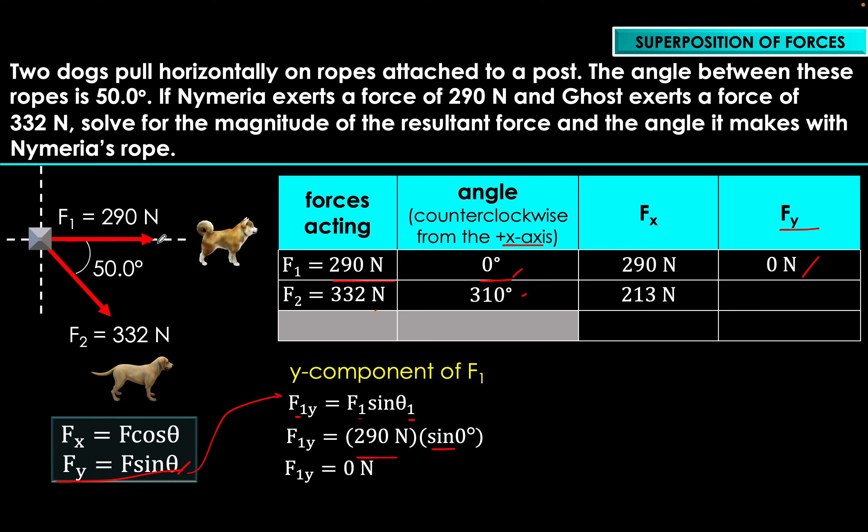These are the x and y components of all forces acting on the post. Since we're solving for the resultant force, we sum the x-components and the y-components separately. For Rx: 290 + 213 = 503 Newtons. Rx represents the overall resultant force along the x-axis — the summation of all forces acting along x.